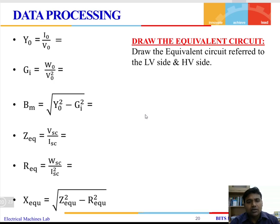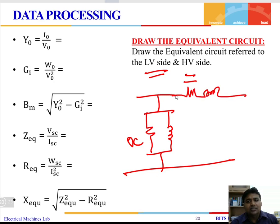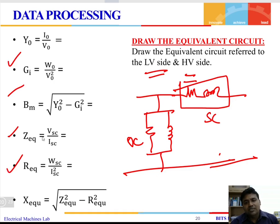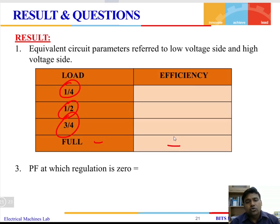You must plot the two curves: efficiency versus output, and regulation versus power factor. Once you have obtained the equivalent circuit of the transformer and all its parameters, draw the low voltage equivalent circuit and the high voltage equivalent circuit. The shunt parameters (R0 and X0) come from the OC test and the series parameters (resistance and reactance) come from the SC test. Use the appropriate formulas to obtain shunt and series parameters from the measured data.